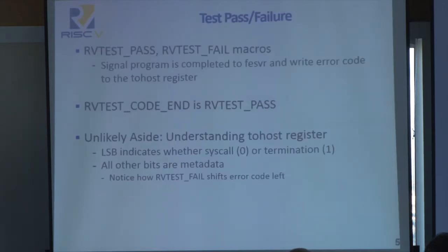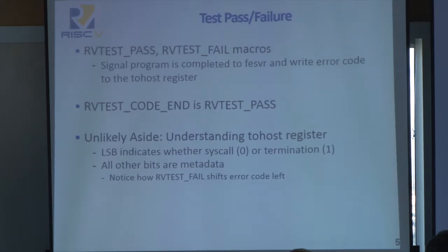If you look further into the test macros included in these test virtual machines, you'll find there's an RV test pass and an RV test fail macro, which will automatically end execution of your program regardless of where you are in the assembly test. This ends the program by signaling to the front end server, through the tohost register, the appropriate execution code.